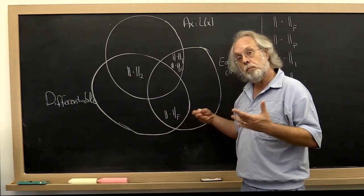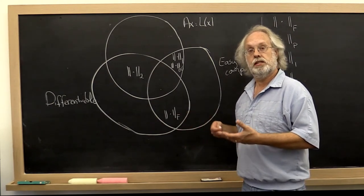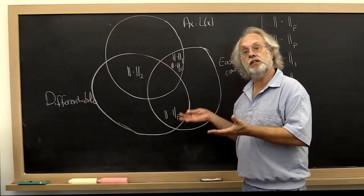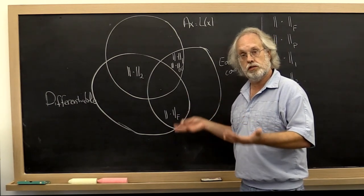And then in our back pocket we have equivalents of norms which tells us, well, if we pick a norm in the situation, then at the very least if the matrix is large, it's large in all norms. Or if it's small, it's small in all norms.